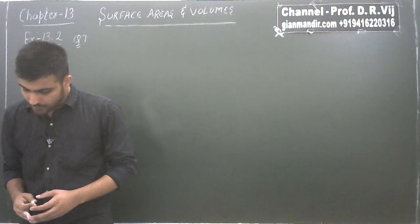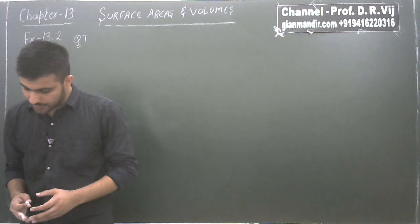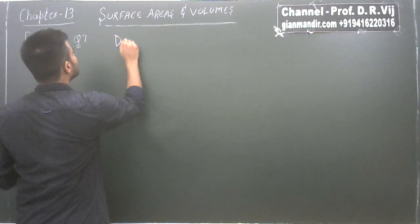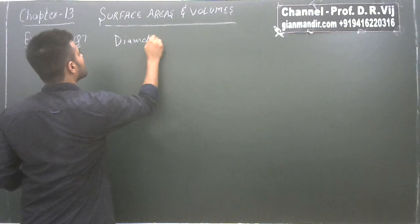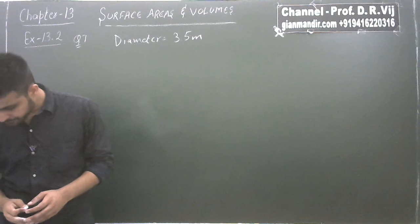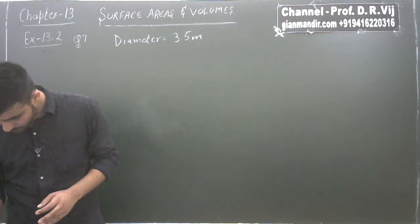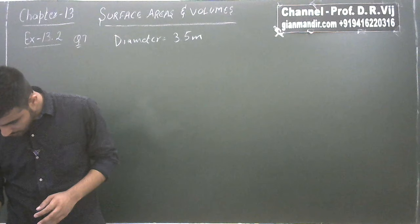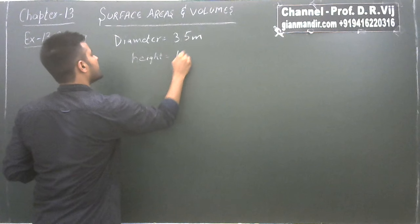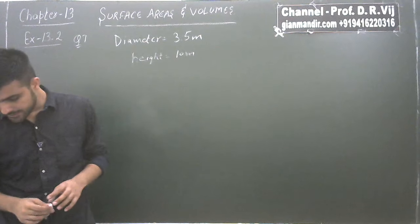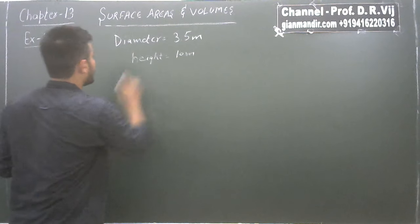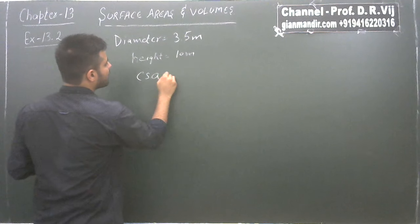Question number 7 says that the inner diameter of a circular well is 3.5 meter, so diameter is given as 3.5 meter. It is 10 meter deep, so height is given as 10 meter. The question asks us to find its inner curved surface area first.